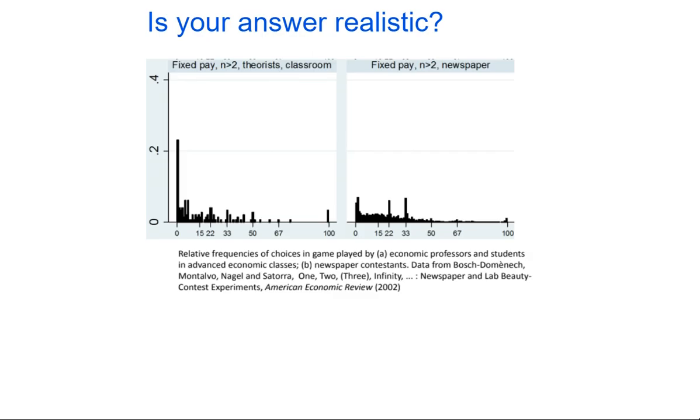So on the right here, on this right hand side diagram, these are the people who were just polled in a random newspaper and we can see the distribution of their guesses. So some people actually did arrive at that ideal solution of zero. But as we said, 33 was a really common example. 22 was a common answer. And 22 was that first iteration of where we say, well, it's not 33. So if everybody guesses 33, I'll guess that 22.